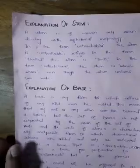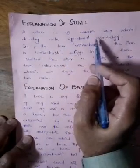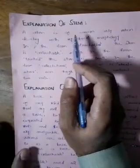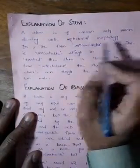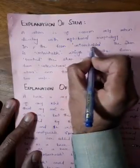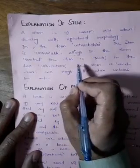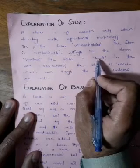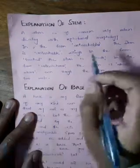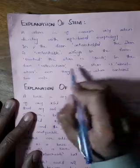Now let's come to the stem. A stem is of concern only when dealing with inflectional morphology — this is the main point. A stem can also be a root. For example, the word 'touch' is both a stem and a root, because it cannot be further analyzed. In the form 'wheelchairs', the stem is 'wheelchair', and even though it contains two roots, it functions as a stem.